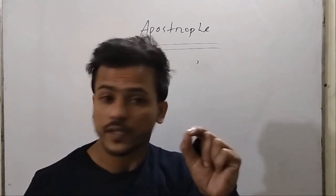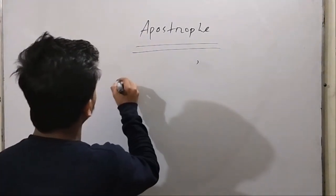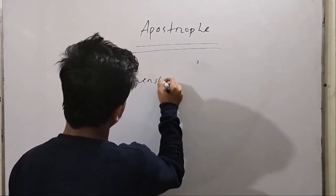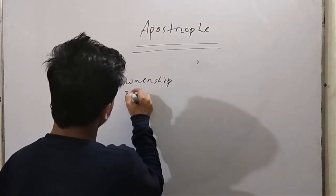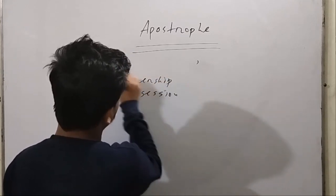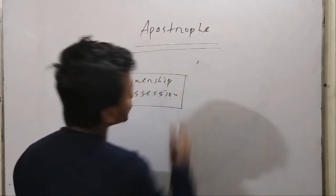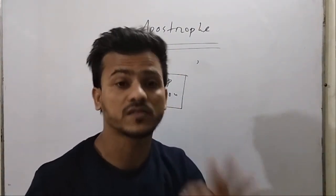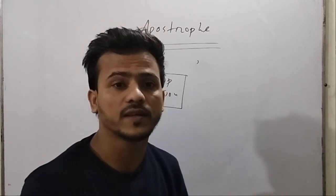The apostrophe's main question is due to the word. It acts as ownership. Ownership position — something belongs to someone.